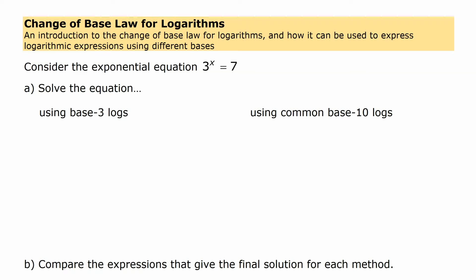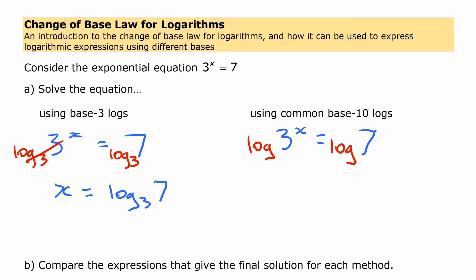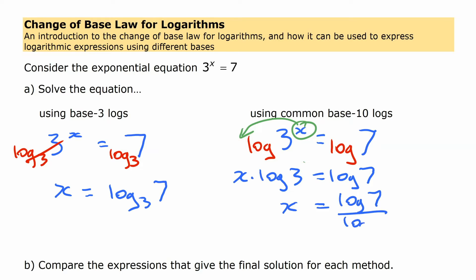To see what the change of base rule is and why it works, we're going to solve a simple exponential equation in two different ways — first by using base 3 logs and then using common base 10 logs. If we use base 3 logs, you get a solution quickly: take the log base 3 of both sides, it cancels out, and x equals log base 3 of 7. If we solve with base 10 logarithms, something doesn't cancel right away, but we use the power rule to move the exponent in front, getting x times log of 3 equals log of 7, then divide both sides by log of 3 to get x equals log of 7 over log of 3.